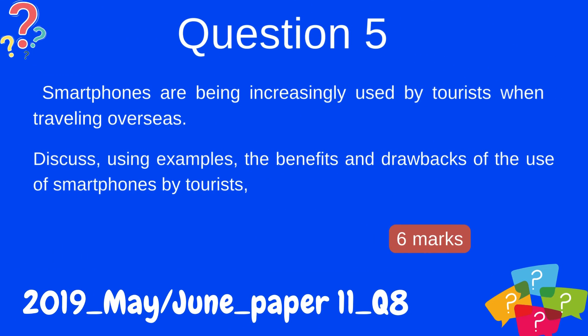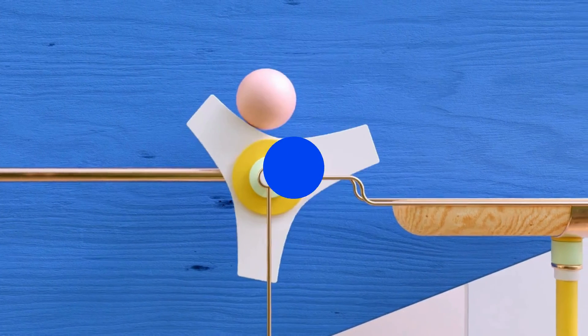Question 5: Smartphones are being increasingly used by tourists when traveling overseas. Discuss, using examples, the benefits and drawbacks of the use of smartphones by tourists.